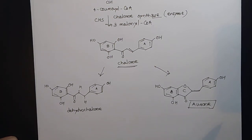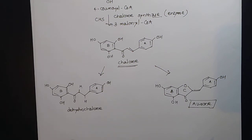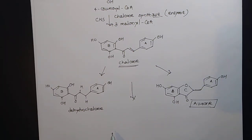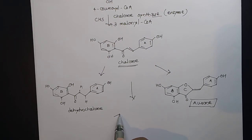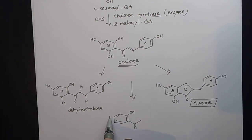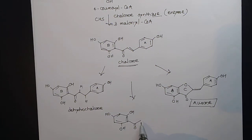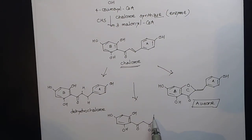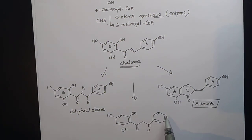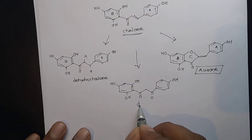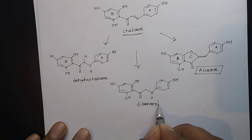So from this chalcone we have prepared two compounds so far. Another compound we can prepare from chalcone is dibenzoyl methane. I will draw the structure directly: this ring will be intact, and rather than the double bond there will be a carbonyl compound, and the remaining moiety will be as such.